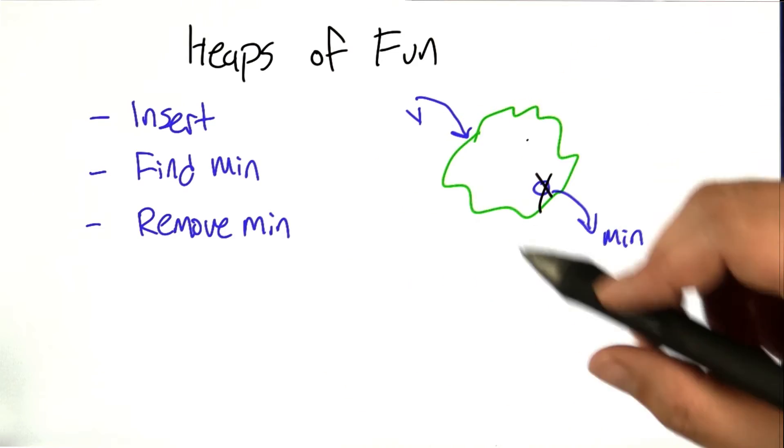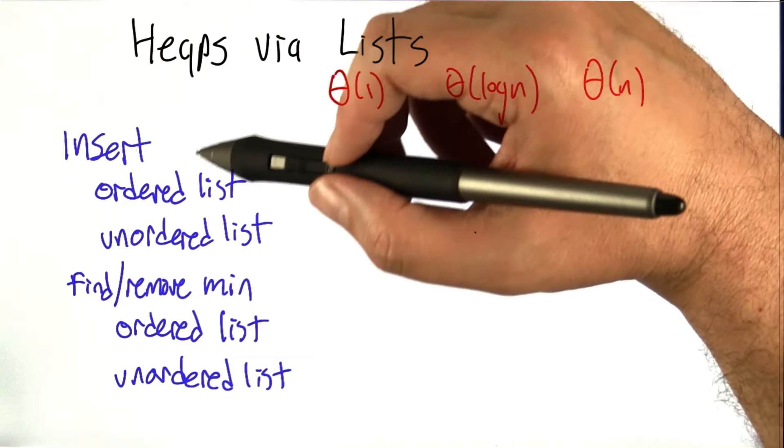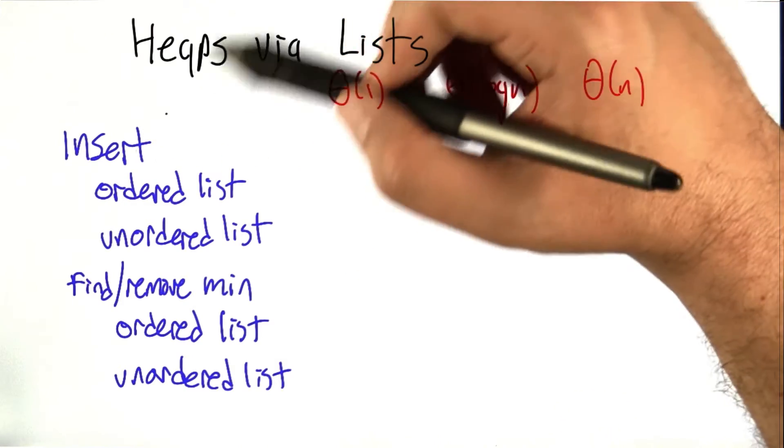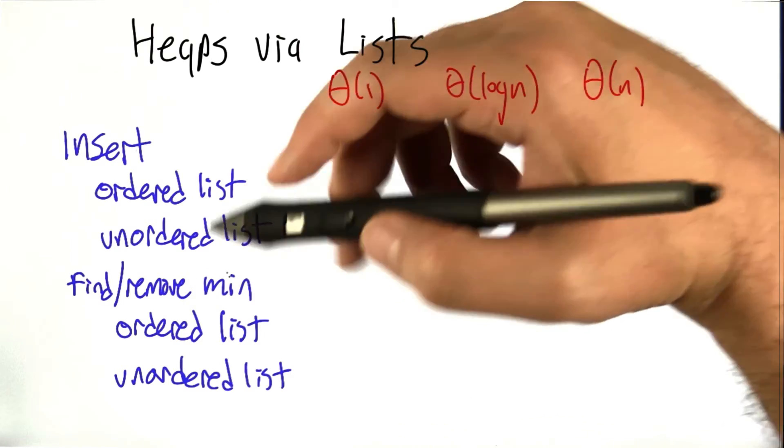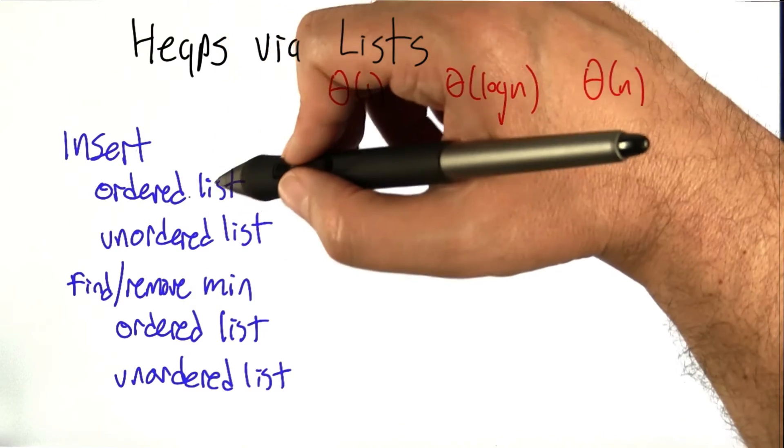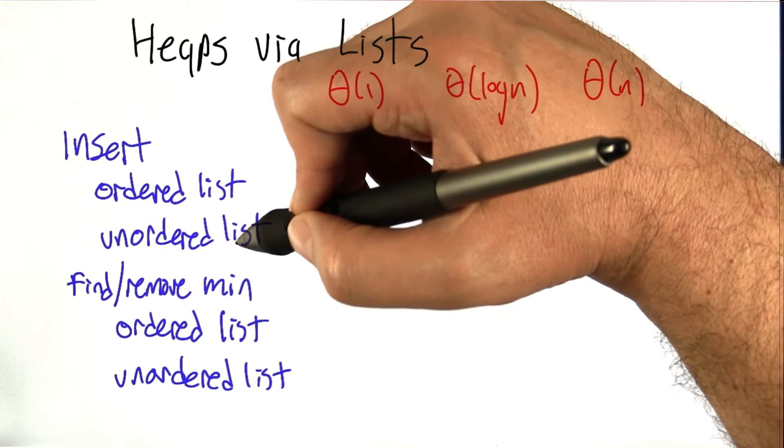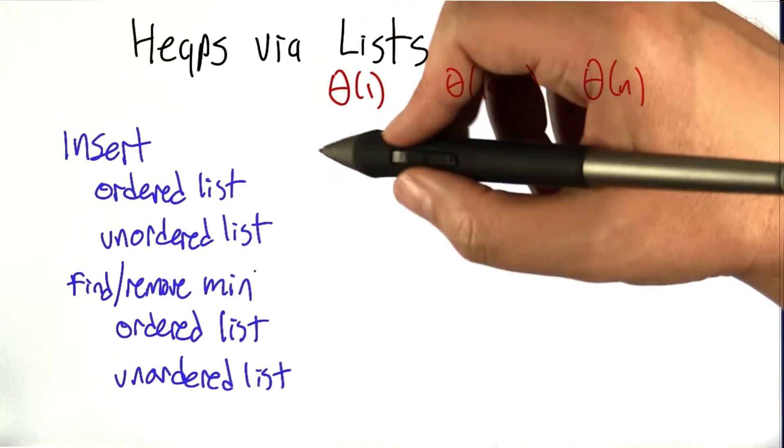Let's use this as an excuse to do a little review. Here's two natural ways of implementing the heap operations of inserting and finding and removing the minimum from the structure. We can do it with an ordered list, or we can do it with an unordered list. And there's trade-offs to doing it this way.